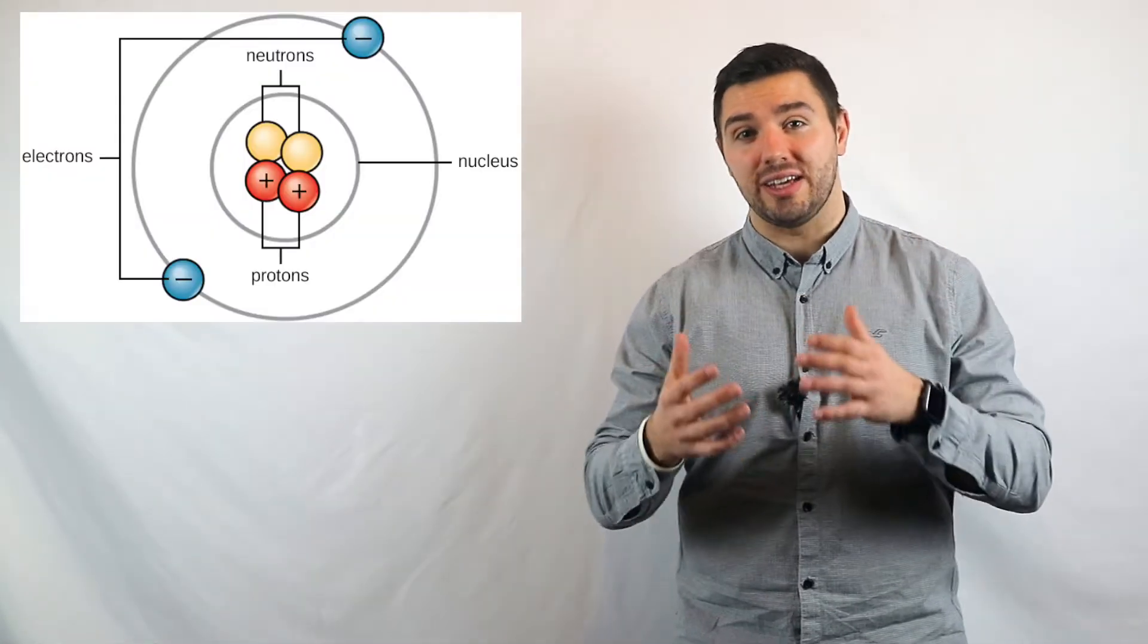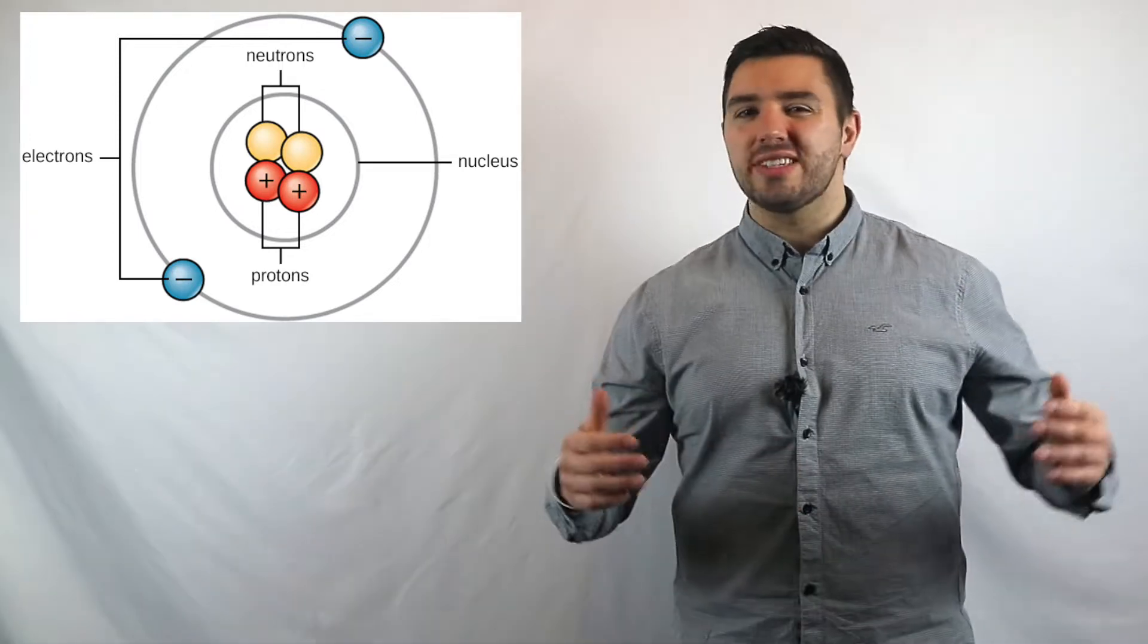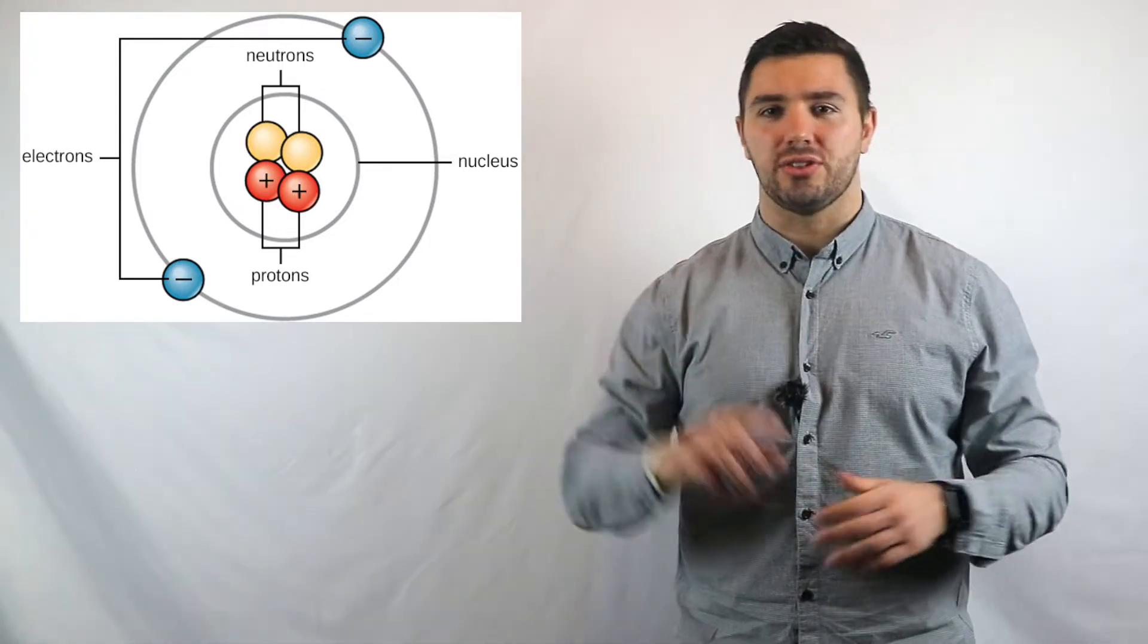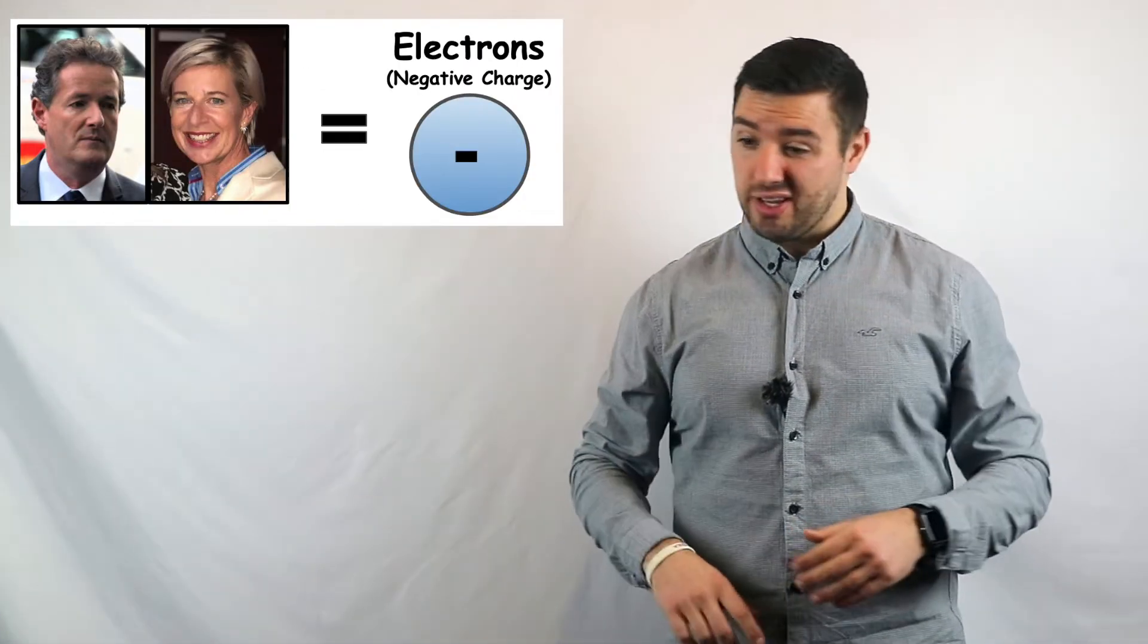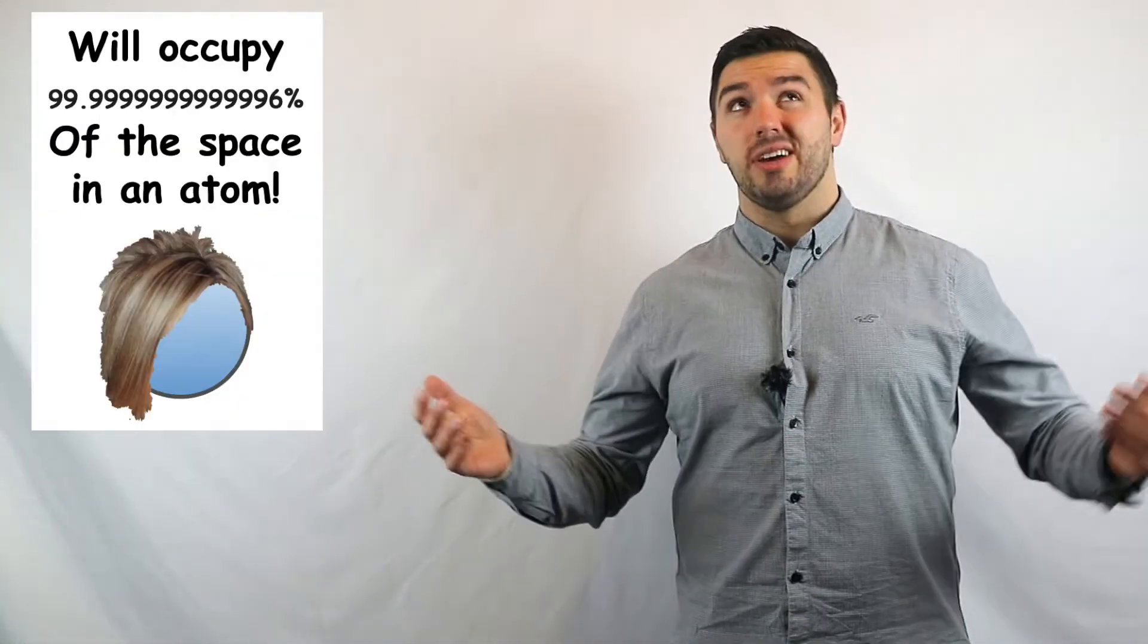Now, protons and neutrons exist inside this place called the nucleus of the atom. It's where it holds the majority of the mass. All those negatives, they're just floating around the outside. Just like negative people in real life, they just occupy the space. And we give them a lot of space.